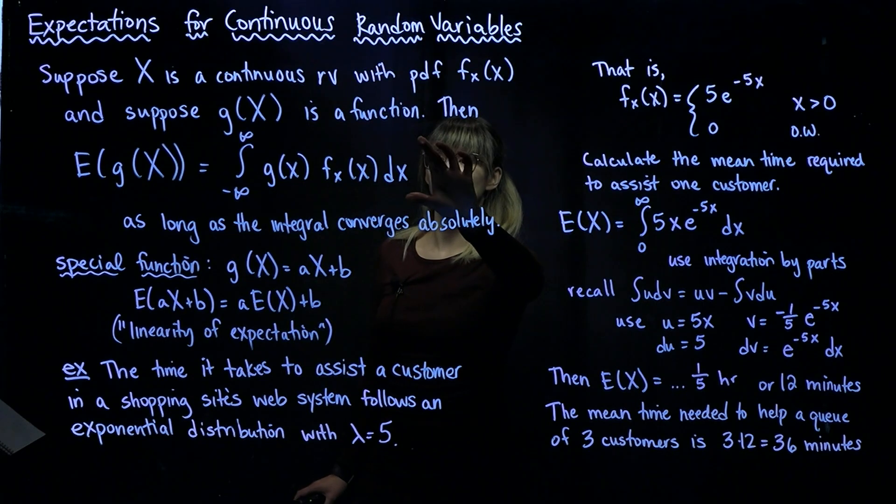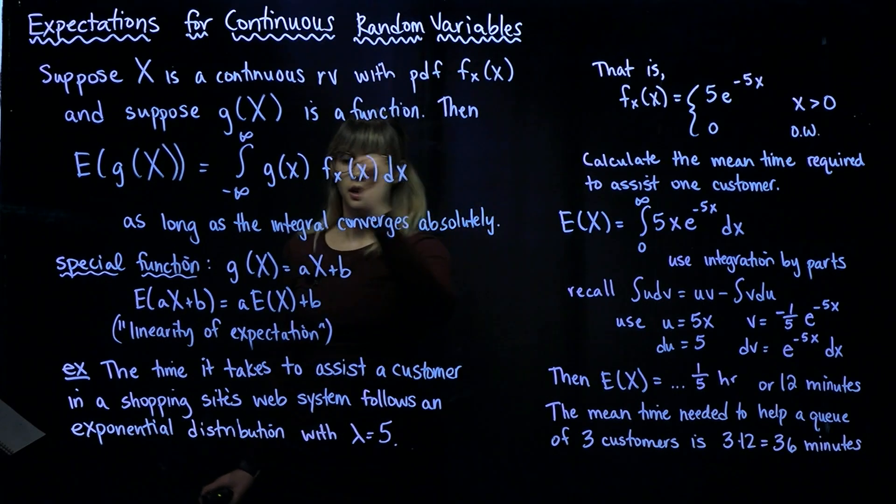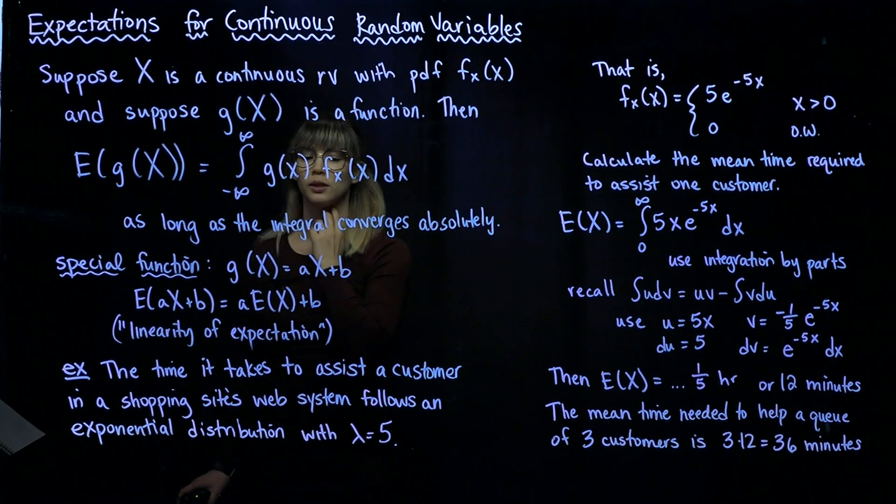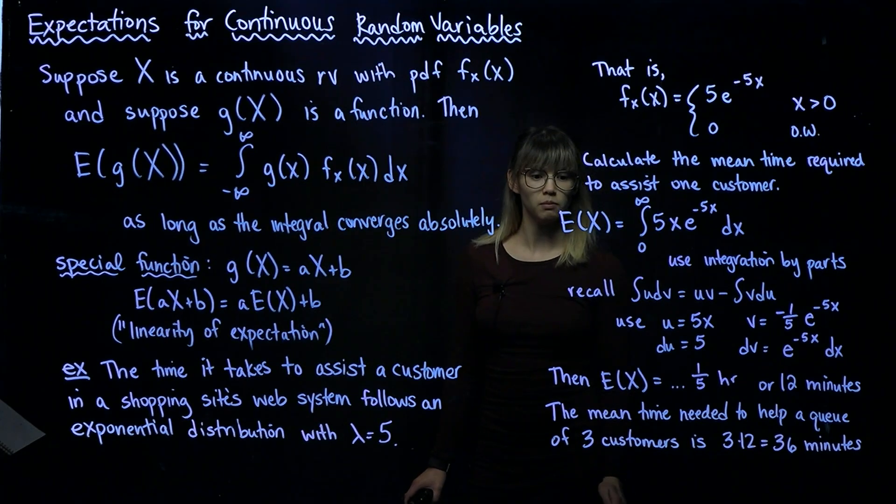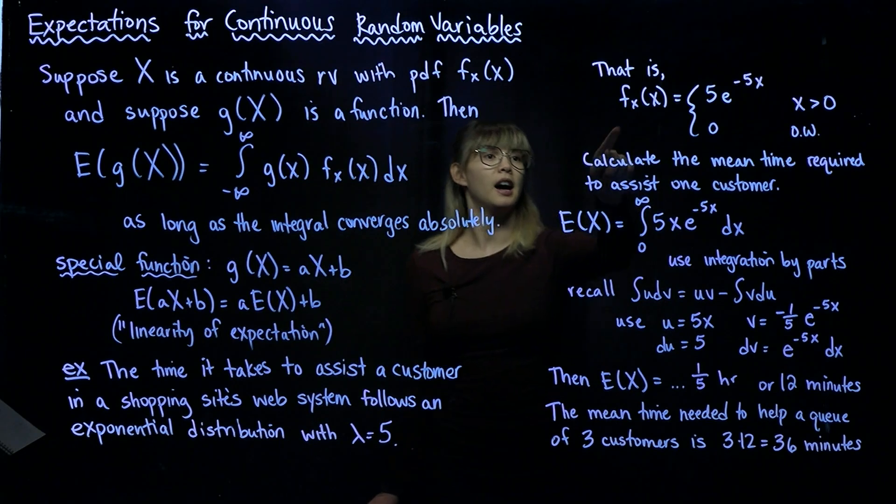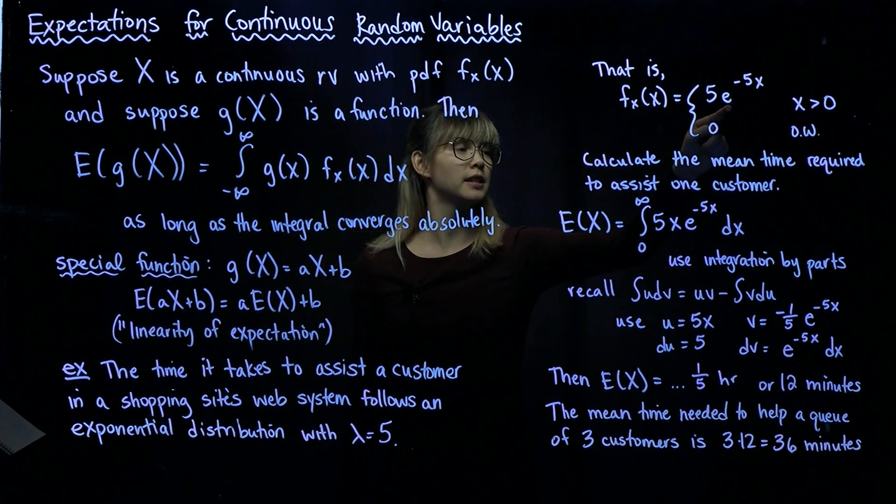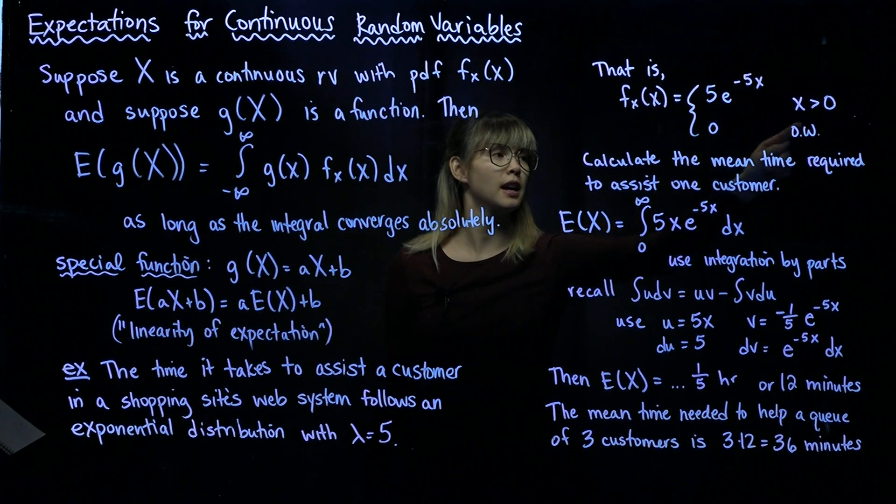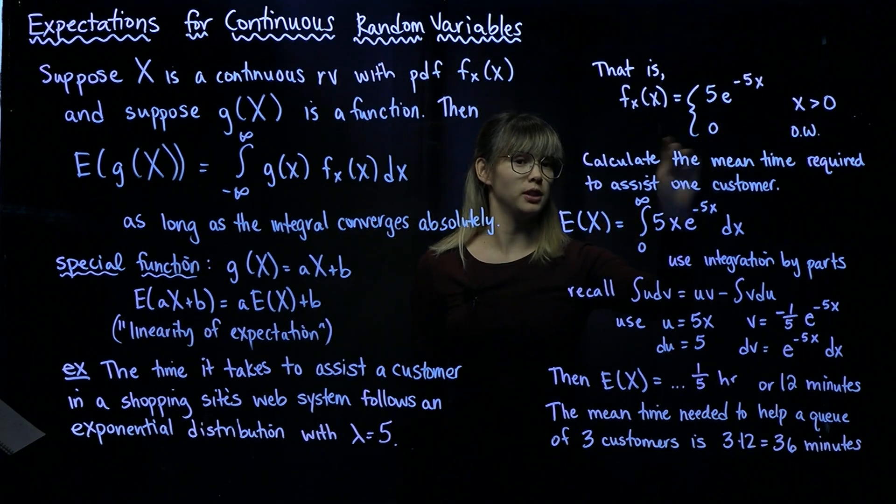Let's look at an example so we can understand this function of a random variable. The time it takes to assist a customer in a shopping site's web system follows an exponential distribution with lambda equals 5. So our PDF is going to be equal to 5 times e to the negative 5x when x is greater than 0, and equal to 0 otherwise.